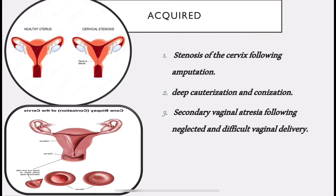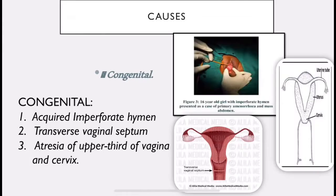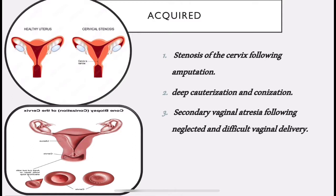Secondary vaginal atresia following neglected and difficult vaginal delivery: vaginal atresia means absence or closure of the vagina. If present since birth it is primary; here it is secondary because the vagina was normal and later became closed following a difficult delivery. To summarize congenital causes: imperforate hymen, transverse vaginal septum, and atresia. Acquired causes: cervical stenosis following amputation, deep cauterization, conization, and secondary vaginal atresia.